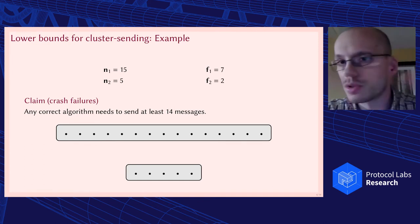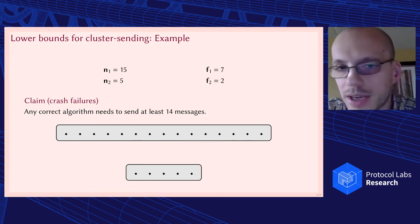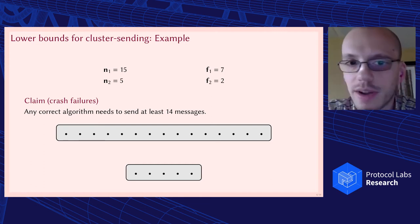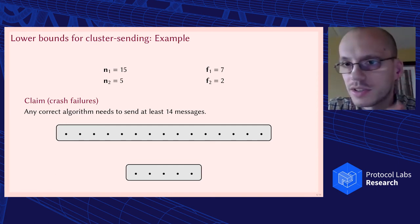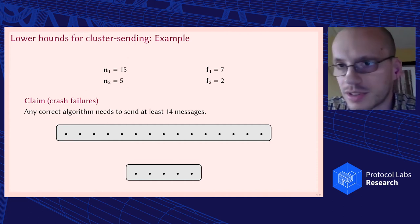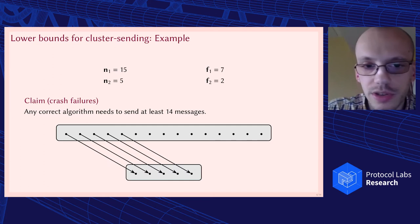So our next question was, is there actually a lower bound on cluster sending? Is there a lower bound on how many messages we need to send between clusters? And we quickly realized that this is the case. So I will not go over all the proof details, but we're going to sketch it here. So here we have a big cluster with 15 replicas, seven of which are faulty, and we have a small cluster with five replicas, two of which are faulty. And in this case I can claim that I need at least 14 messages.